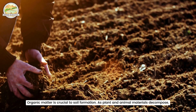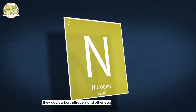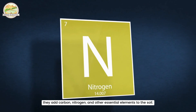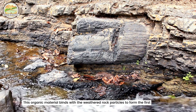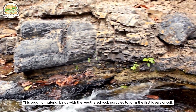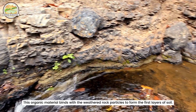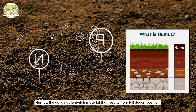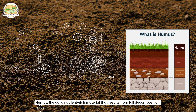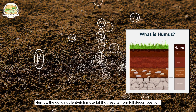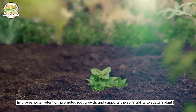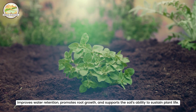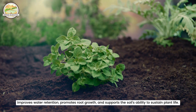As plants and animal materials decompose, they add carbon, nitrogen and other essential elements to the soil. This organic material binds with the weathered rock particles to form the first layers of soil. Humus, the dark, nutrient-rich material that results from full decomposition, improves water retention, promotes root growth and supports the soil's ability to sustain plant life.